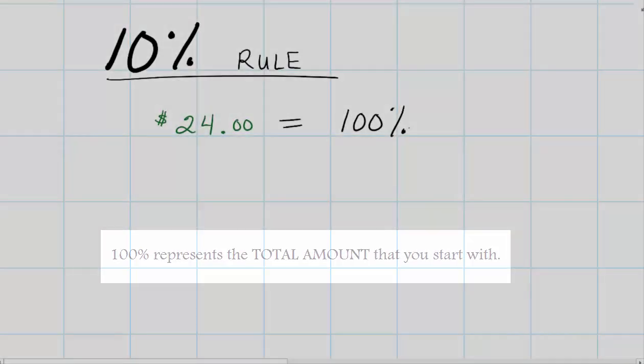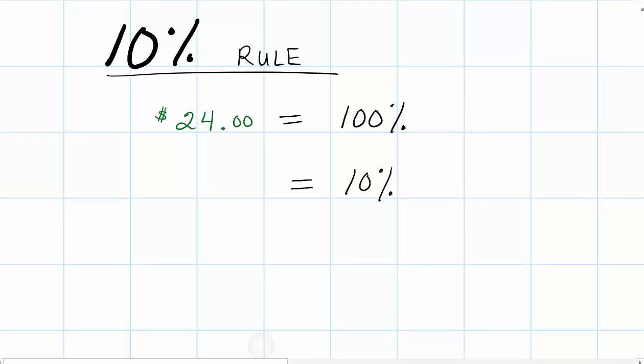What we're going to do is move the decimal place one place to the left and that's going to create 10% of $24. Moving the decimal one place to the left, since we've lost a place value and gone from 100% to 10%, we just lose a place value in the number $24. So the way that looks is 2.4, but we've got to have it in correct notation. Correct notation for money is $2.40.